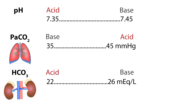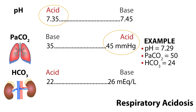When you need to interpret ABGs, it is helpful to lay out a chart with pH at the top of the first column, then lungs and kidneys. Start labeling in the second column: acid, base, acid. Continuing on to the third column: base, acid, base. If you've memorized the normal values, you can plug them right in — pH is 7.35 to 7.45, PaCO2 is 35 to 45, and HCO3 is 22 to 26. With a chart written out, you can easily figure out ABG problems. Let's go over a few examples.